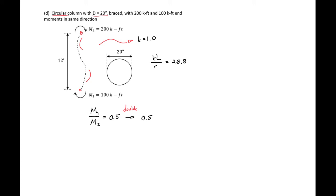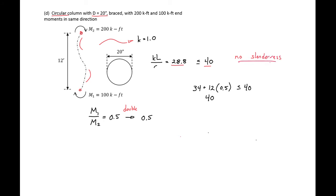We plug this into our ACI limit: 34 plus 12 times 0.5 equals 40, and this must be less than or equal to 40, so our limit here is 40. Since our kL/r of 28.8 is less than 40, we do not need to consider slenderness.